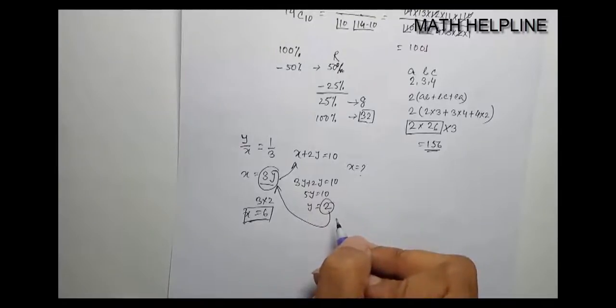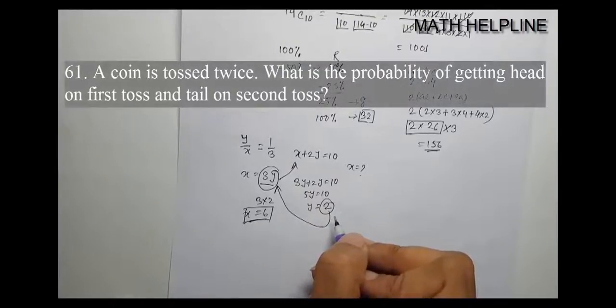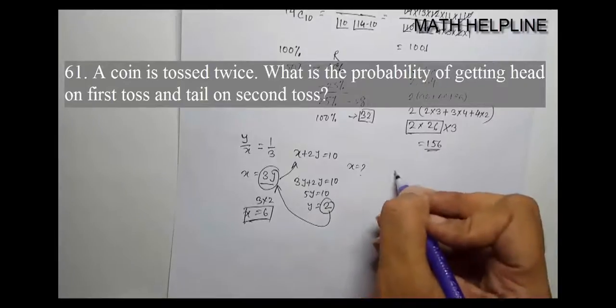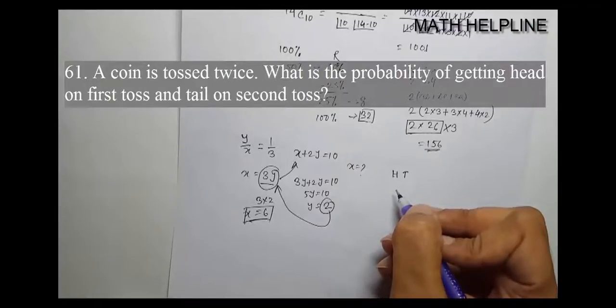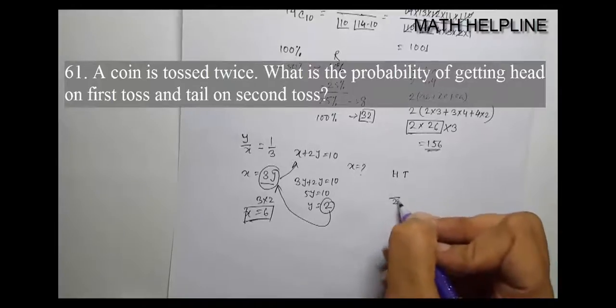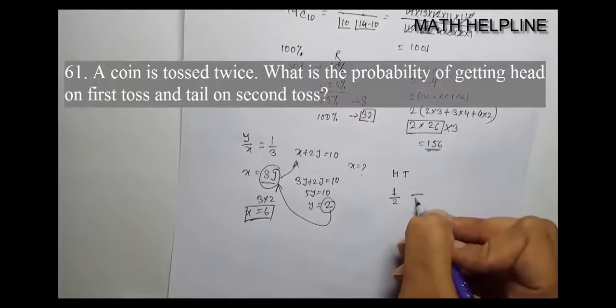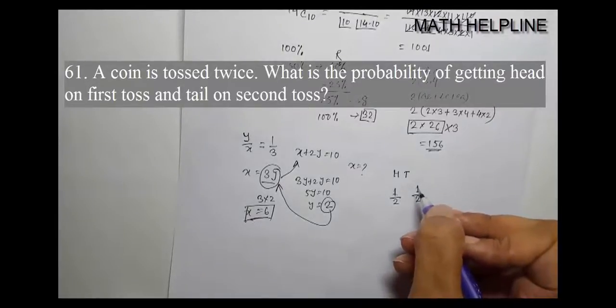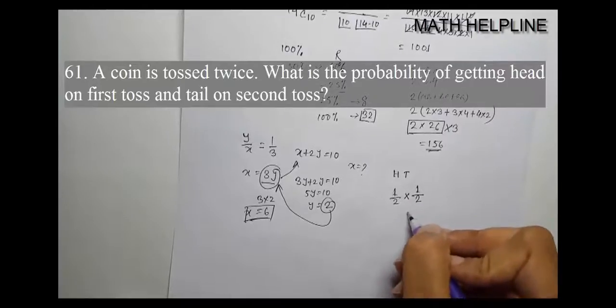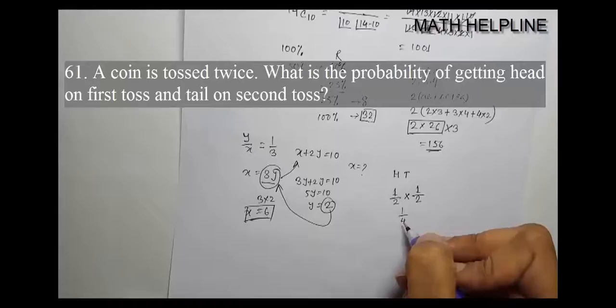A coin is tossed twice. What is the probability of getting head on first toss and tail on second toss? The probability of head on first toss is 1 by 2, and tail on second toss is 1 by 2. So the total probability is 1 by 2 times 1 by 2 equals 1 by 4. The answer is 1 by 4.